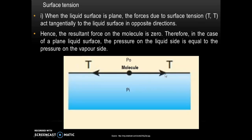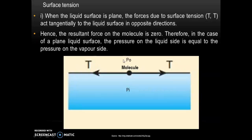When a liquid surface is plane, the forces due to surface tension T act tangentially to the liquid surface in opposite directions. Hence, the resultant force on the molecule is zero because one is acting in the positive x direction and the other in the negative x direction. Therefore, in case of a plane liquid surface, the pressure on the liquid side is equal to the pressure on the vapor side — that is, inside pressure equals outside pressure.